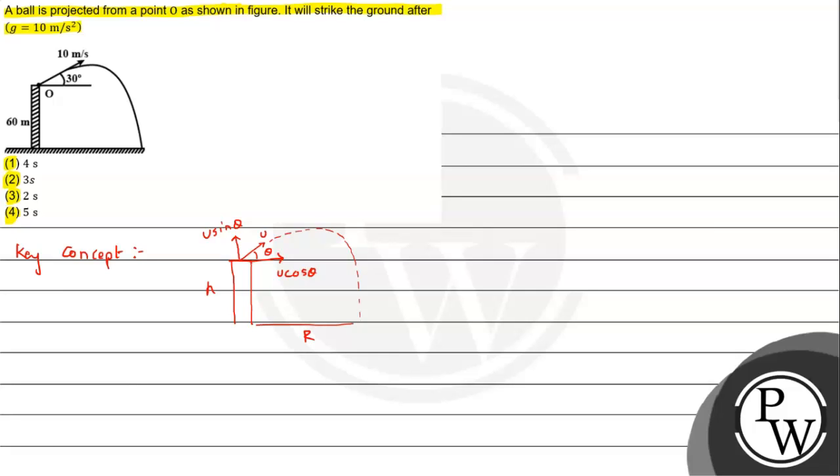If h is the height of the tower, we can see that this is the case of two-dimensional motion. So we can analyze the motion into two parts: along x and along y.